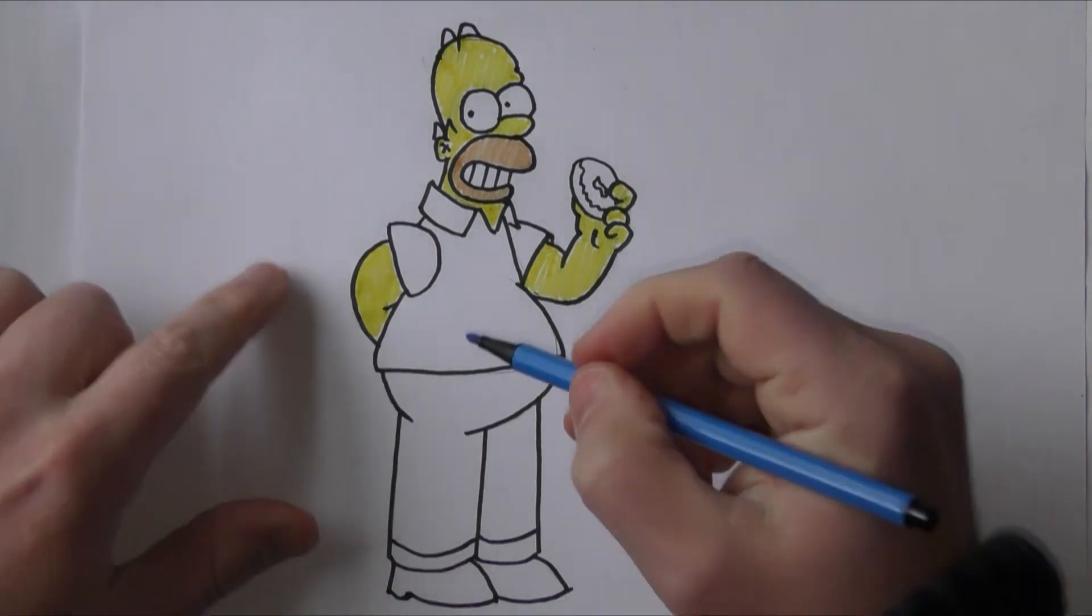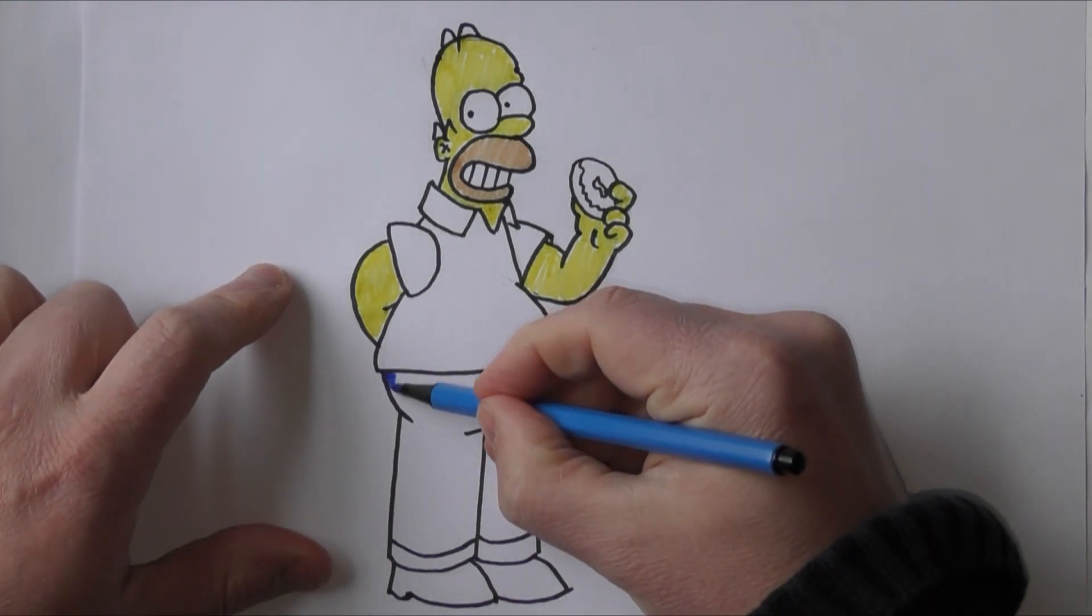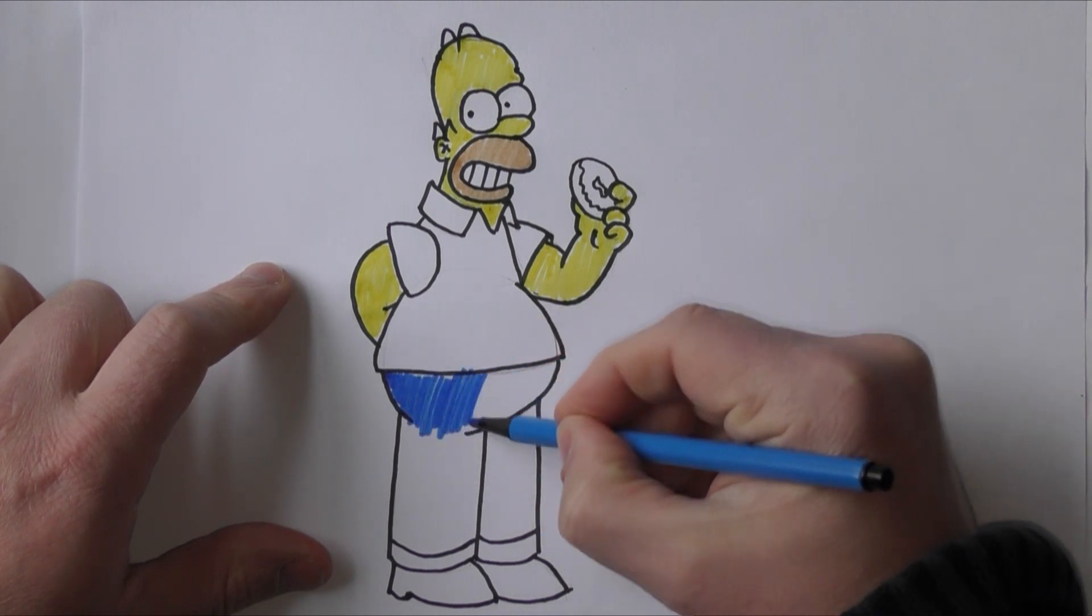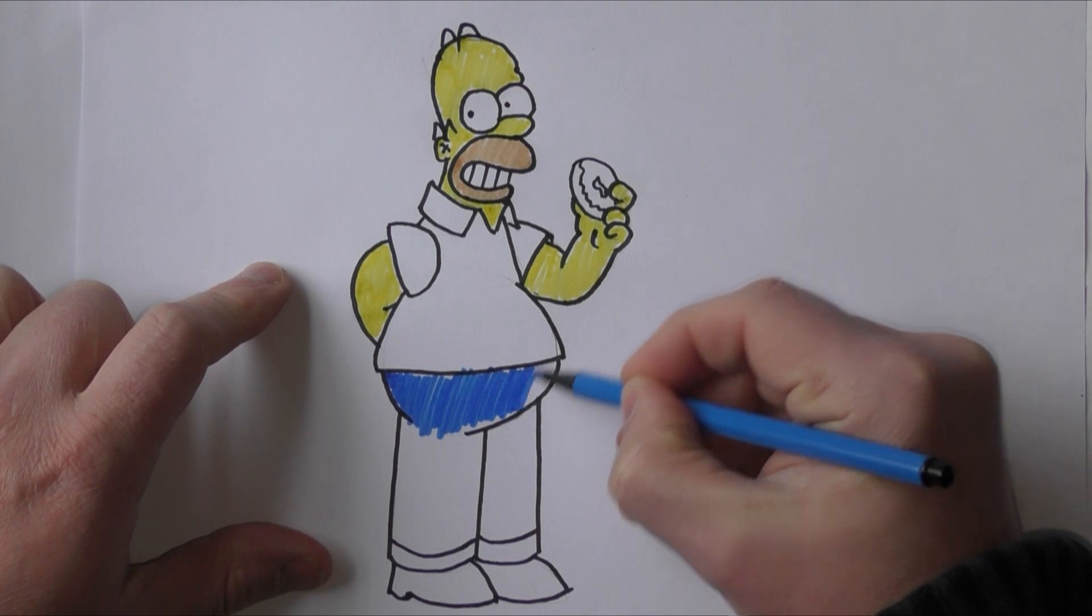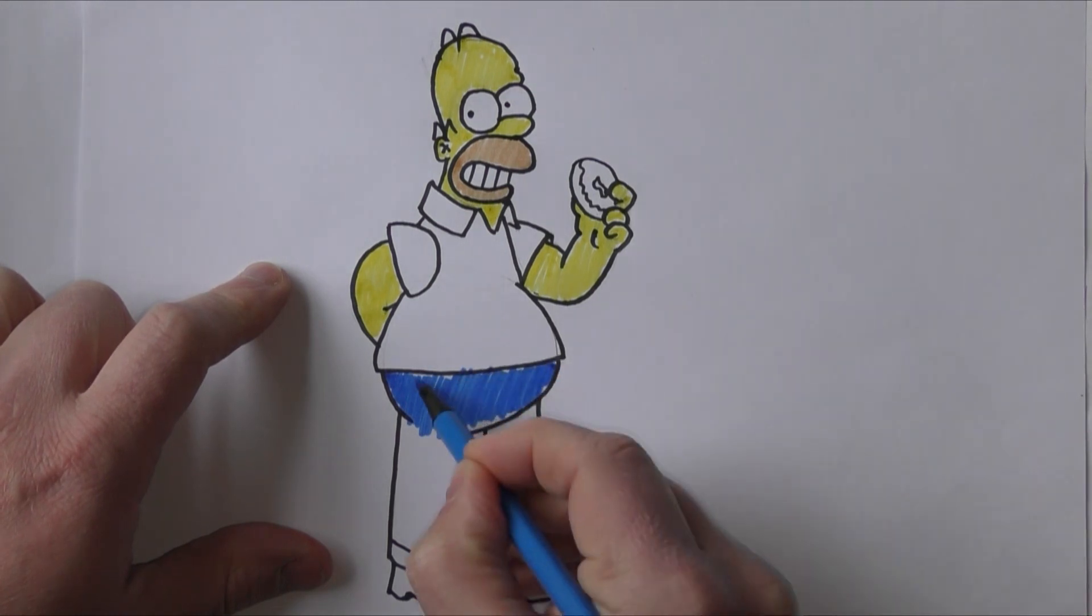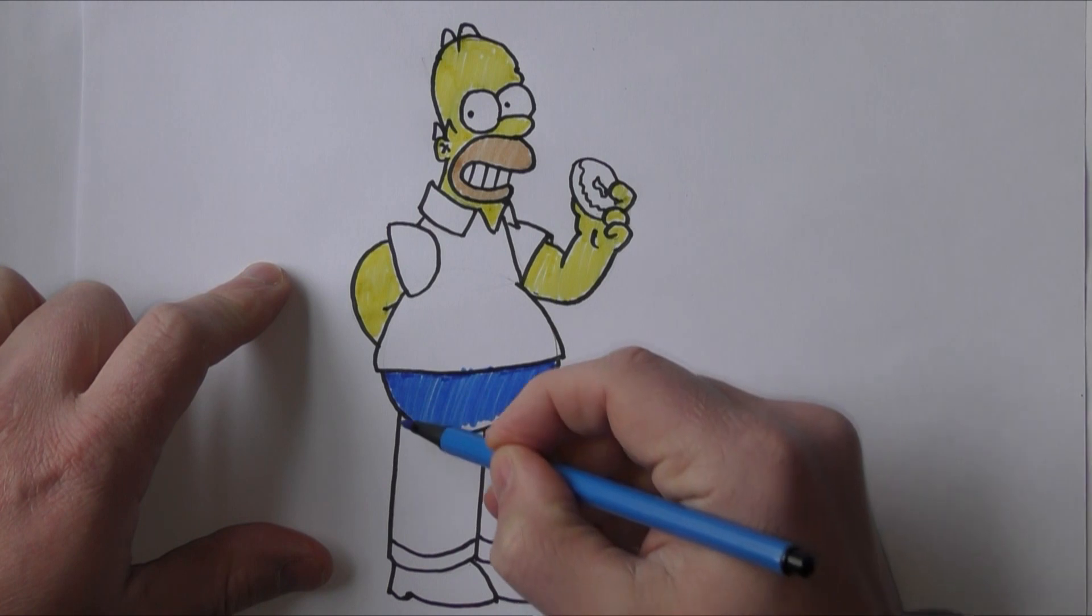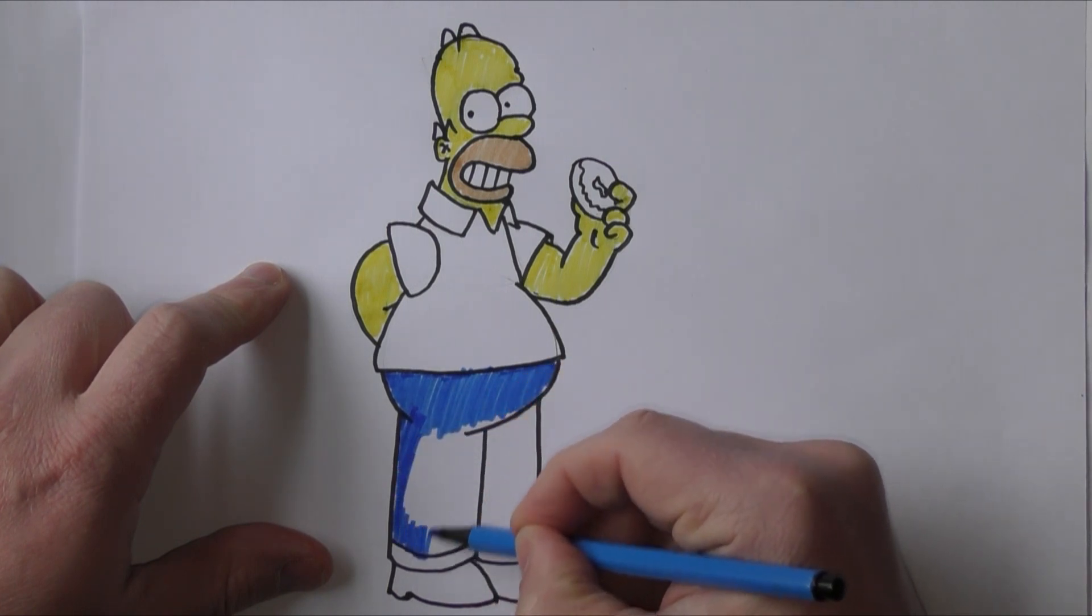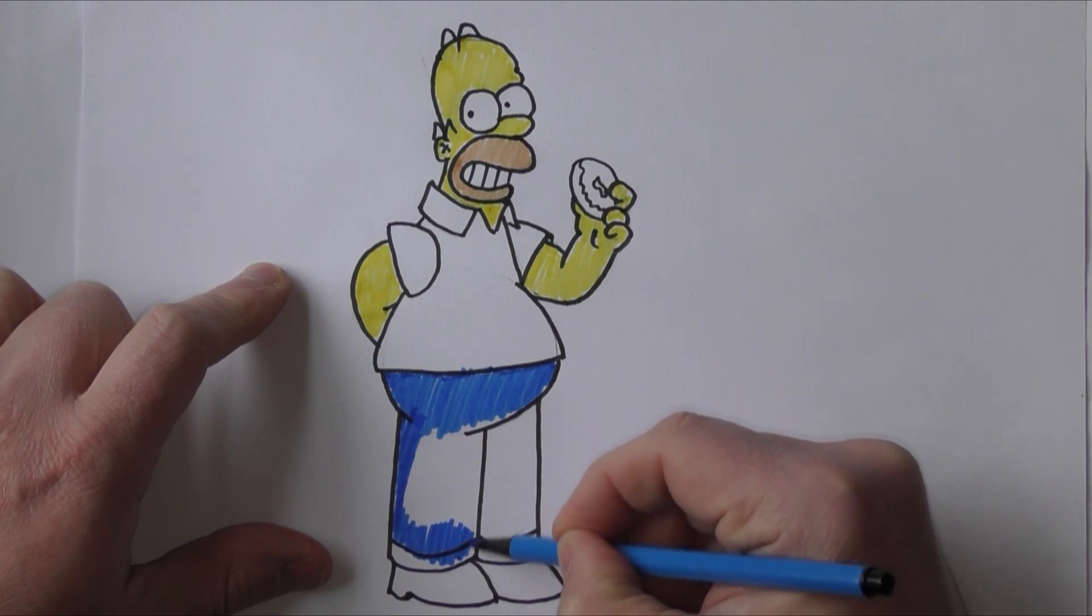Now we'll color in his trousers in blue. There we go, I'm doing this quite quickly just so we can keep it going, but you can take as long as you like doing these. Okay, the blue goes right the way down, so under that line, that sort of crease line.